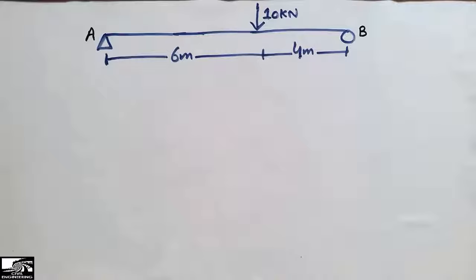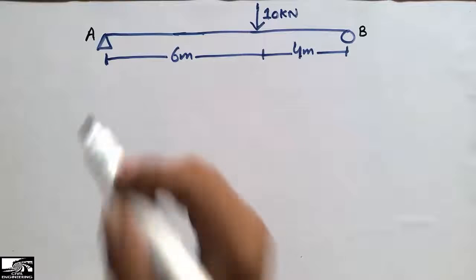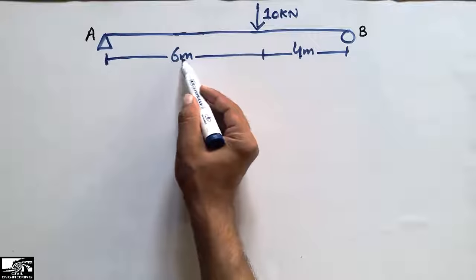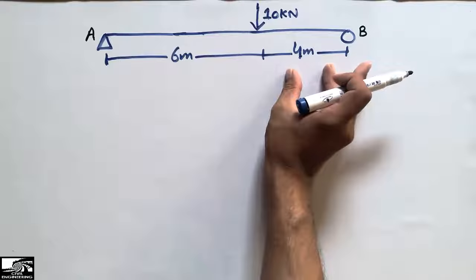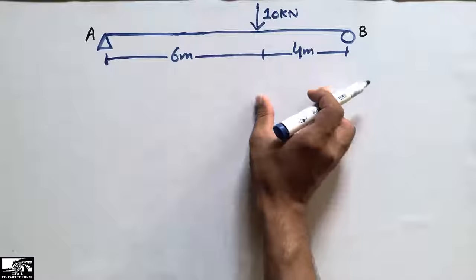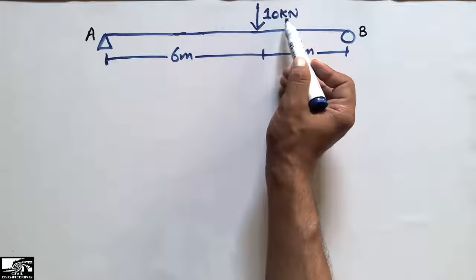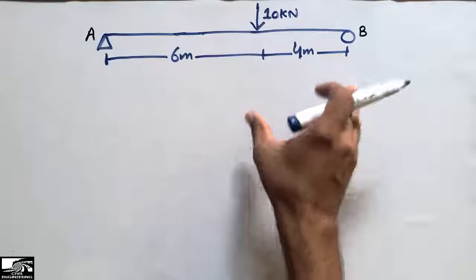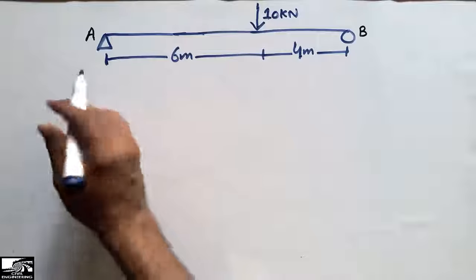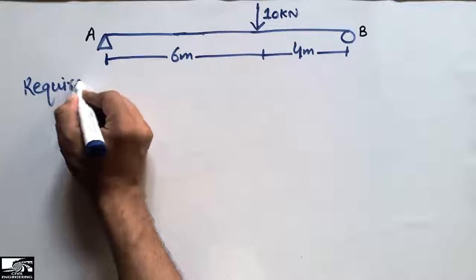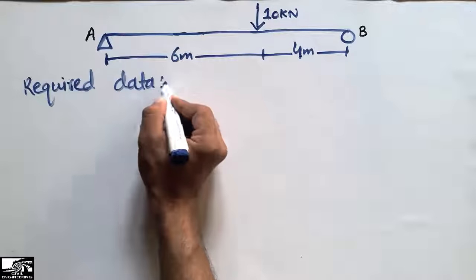Hello guys, welcome back to the Seven Engineering YouTube channel. Please subscribe for daily videos. Today we have a simply supported beam with a total length of 10 meters — 6 meters on the left and 4 meters on the right side of the load. A concentrated load of 10 kilonewtons acts at 6 meters from the left support. We are required to find the unknown support reactions.